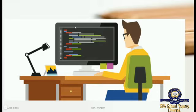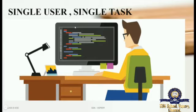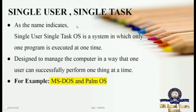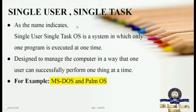Tell me the topic now - single user, single task. This operating system is called single user single task operating system. A single user doing only one function at a time is called single user operating system. It is performing only one action at a time, one program at a time, executing only one process at a time. It is specially designed to manage the computer to perform only one action at a time.